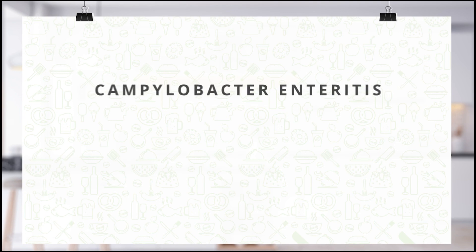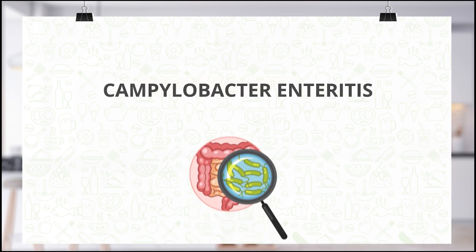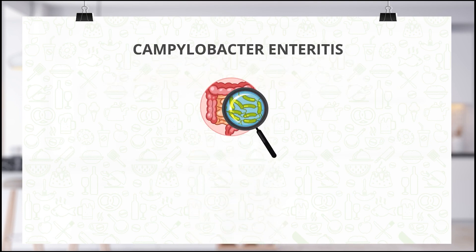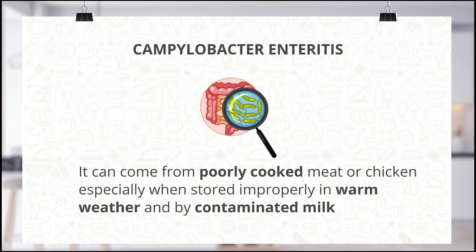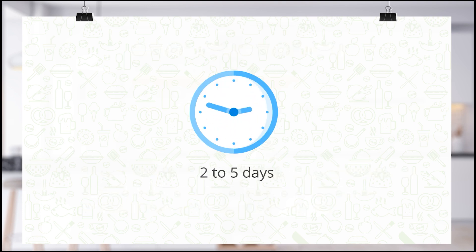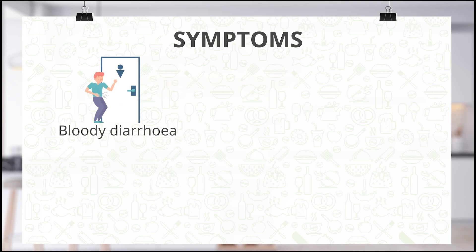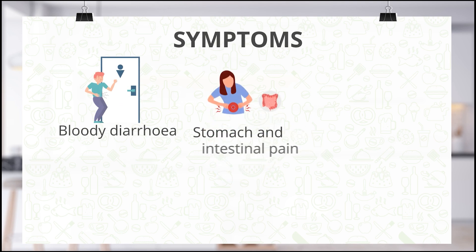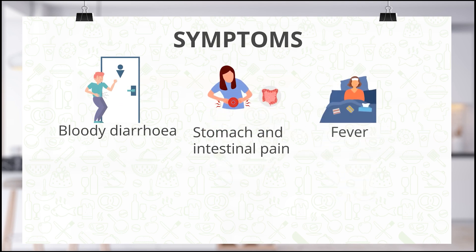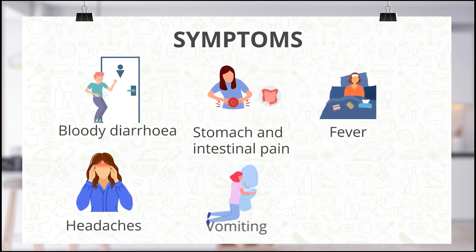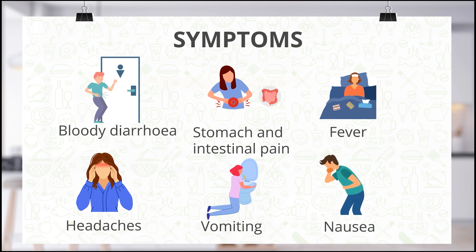One of the most common food poisoning bacteria is Campylobacter enteritis. It can come from poorly cooked meat or chicken, especially when stored improperly in warm weather, and from contaminated milk. It takes about two to five days to feel the symptoms, which are bloody diarrhea, stomach and intestinal pain, fever, headaches, vomiting, and nausea, and it lasts for three to six days.